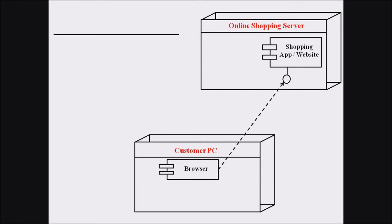There exists an interface between the two nodes. This interface is represented with the help of a circle, and here the Online Shopping Server is providing the interface. That is why the circle is represented inside the component of the Online Shopping Server. The Customer PC is creating a communication with the Online Shopping Server, and that is why there exists an association represented with the help of a dotted arrow. The relation or the interface between these two is the login relationship.